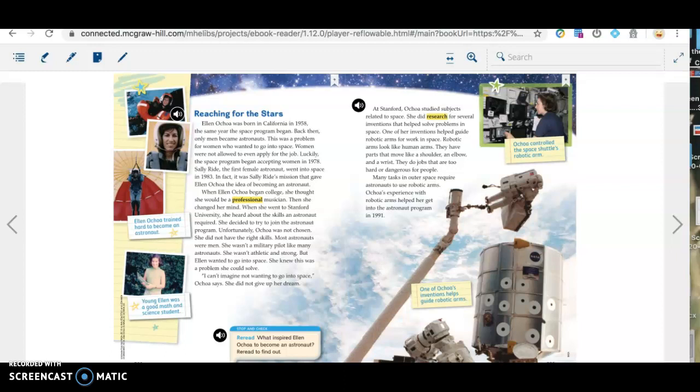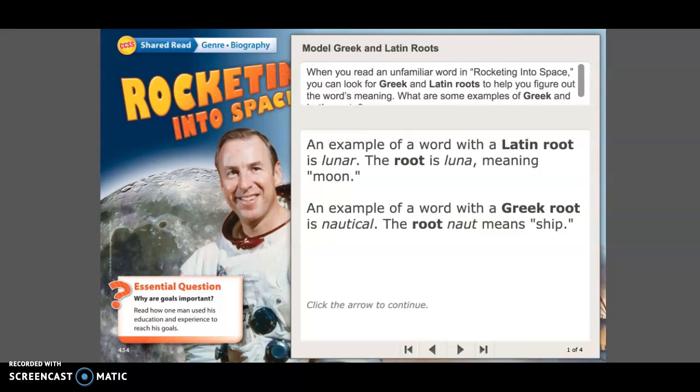Now let's move on to Greek and Latin roots. All right. So let's take a look at rocketing into space. But we're going to focus on Greek and Latin roots. And it says here, when you read an unfamiliar word in rocketing into space, you can look for Greek and Latin roots to help you figure out the word's meaning. What are some examples of Greek and Latin roots?